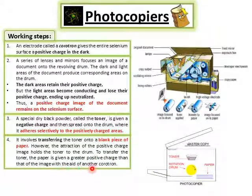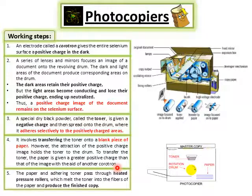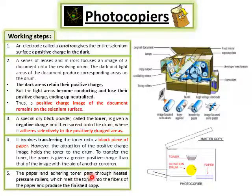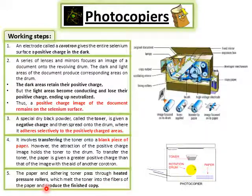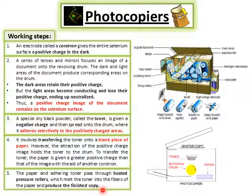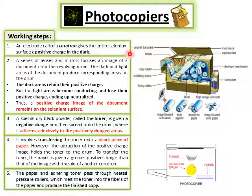With the aid of another corotron, the paper is given a greater positive charge than that of the image. Finally, the paper and adhering toner pass through heated pressure rollers, which melt the toner into the fibers of the paper and produce the finished copies.